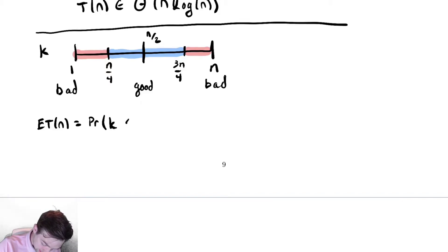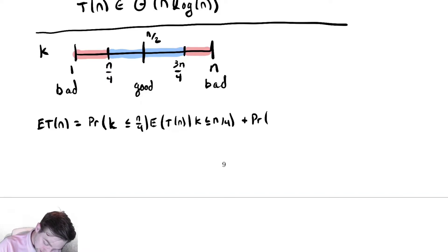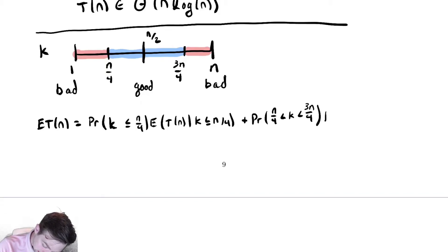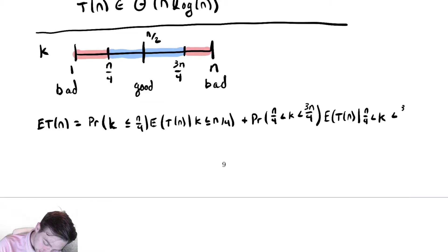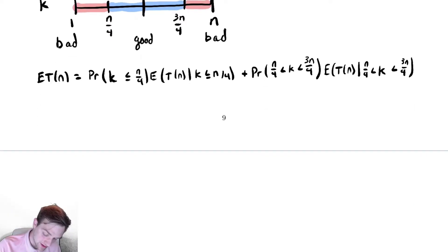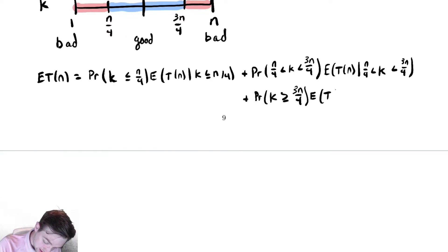We write the expected runtime using conditional probability: the probability that k ≤ n/4 times the expected runtime given that, plus the probability that n/4 < k < 3n/4 times the expected runtime given that, plus the probability that k ≥ 3n/4 times the expected runtime given that. We need to be careful writing these conditions down precisely.